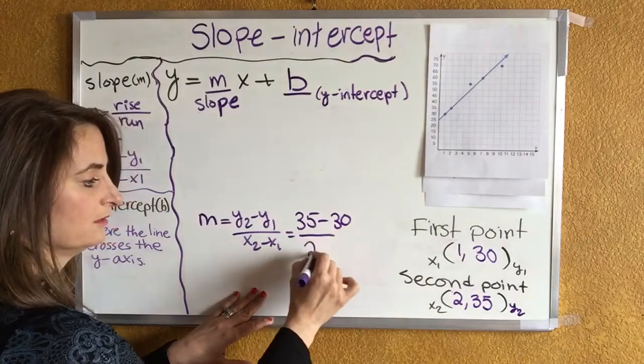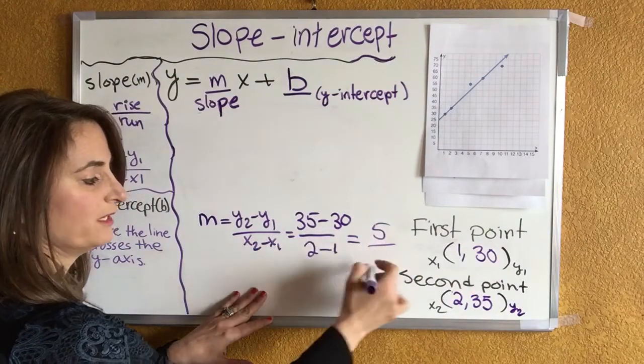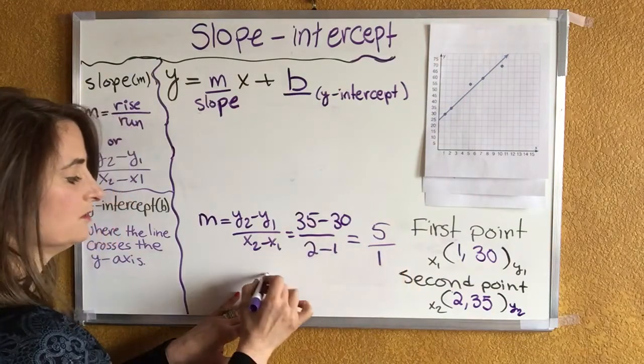35 minus 30 is 5 divided by 2 minus 1 is 1, so the slope is 5.